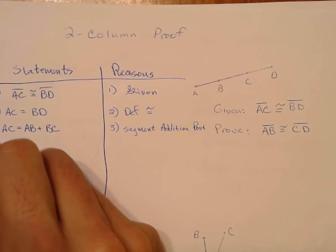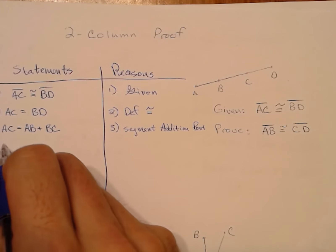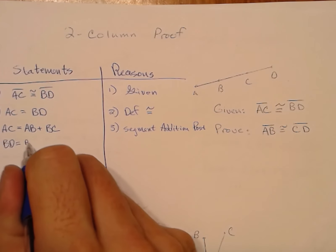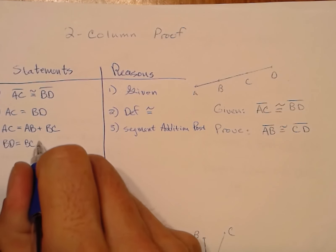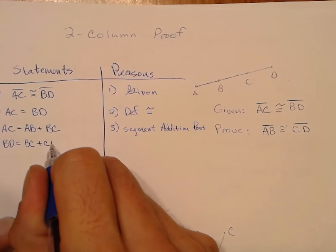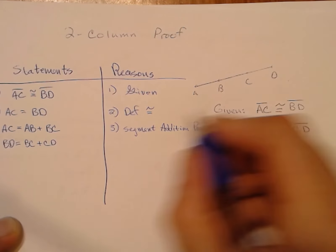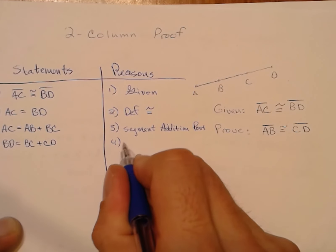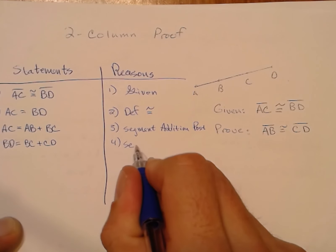And if I'm going to say it for AC, I might as well say it for BD as well. BD is really BC plus CD — also the segment addition postulate.